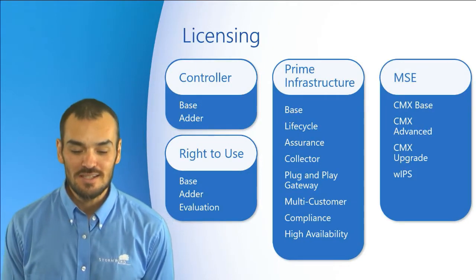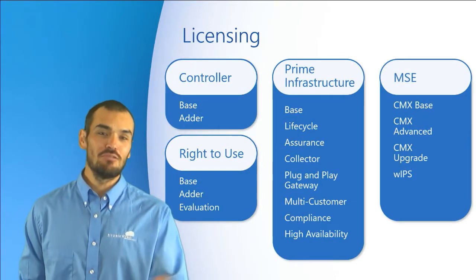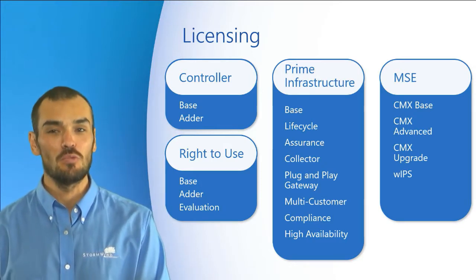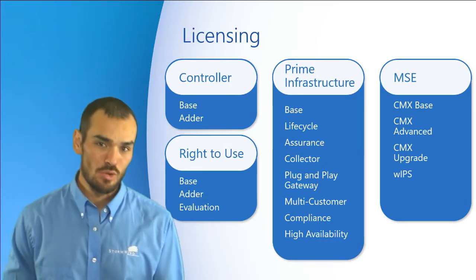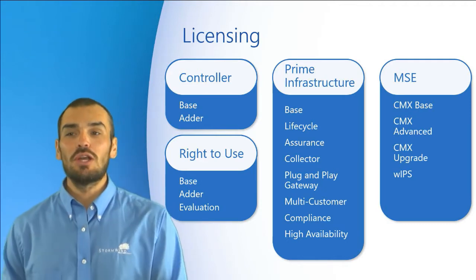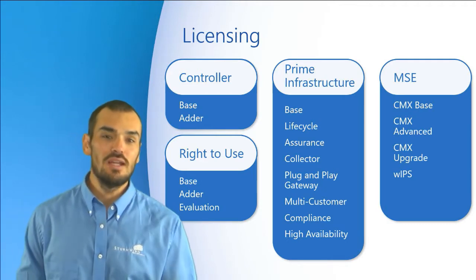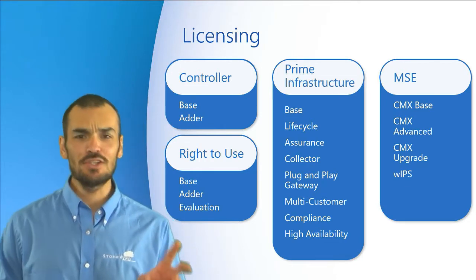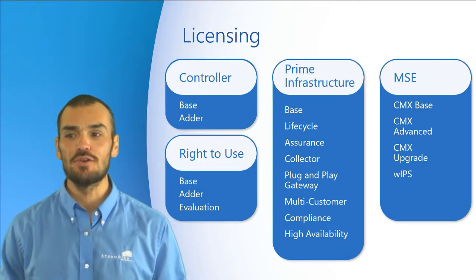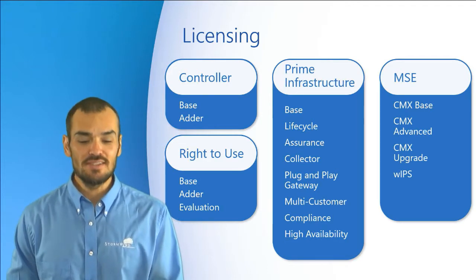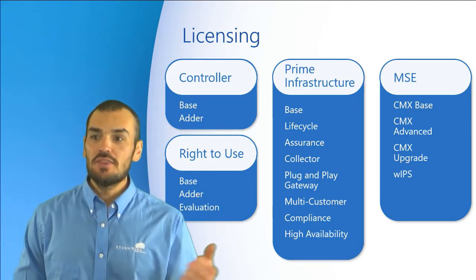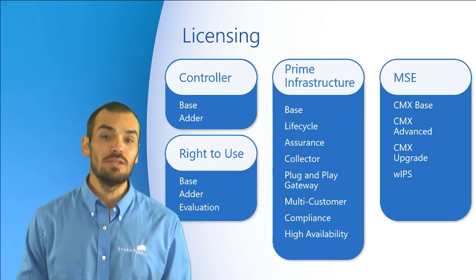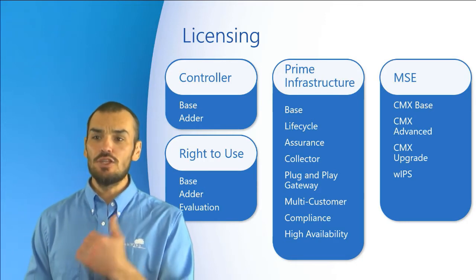As far as licensing is concerned, we basically break them down into major categories. The first one, and the most applicable to wireless LANs, is going to be the controller licenses. Controllers require licenses to monitor and configure the access points on a network. There are basically two types: the base license and the adder license.